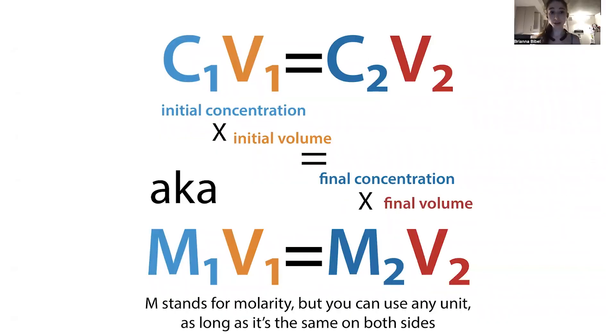The C stands for concentration, so we have our initial concentration. V is volume. We multiply our initial concentration by our initial volume, and this value is going to be equal to our final concentration times the final volume. This is really useful if we have stock solutions that are more concentrated than we want to actually have them in our final solution. We'll have some final volume with higher volume and lower concentration.